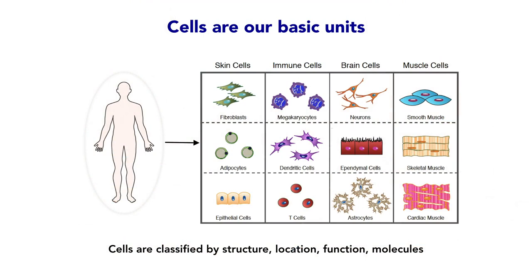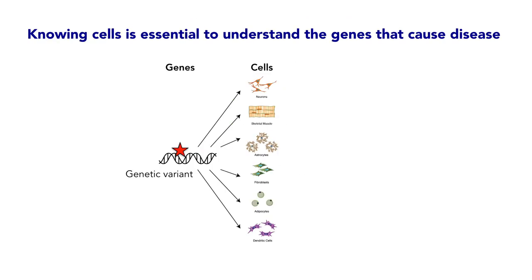Cells are the basic unit of life, and biologists have for many centuries been classifying cells into categories based on very different features. At first this was really their structure and location; over time this got mapped to the functions they performed, and in the last century with the emergence of molecular biology, to the molecules they expressed. Knowing cells is important for many things, from basic scientific curiosity to understanding the genes that cause disease. While we have the same genome in all our cells, a disease-associated variant present in all cells may manifest differently depending on where the gene product is used — in neurons causing a neurodevelopmental disorder like autism spectrum disorder, or in muscle causing muscular dystrophy.